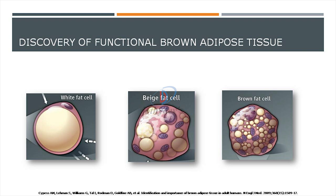This highlights the recognition of different types of adipose tissue: white fat cells, beige fat cells, and brown adipose tissue. Brown adipose tissue has raised the possibility for its involvement in human energy homeostasis and in preventing type 2 diabetes. However, brown adipose tissue decreases with age, with higher body mass index, and with higher glucose levels.